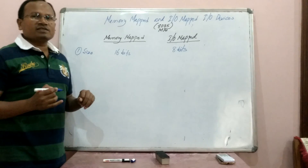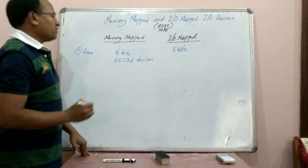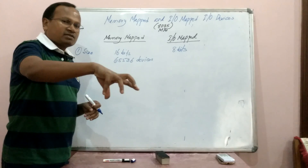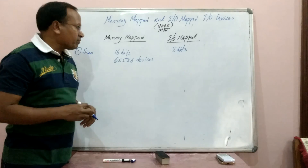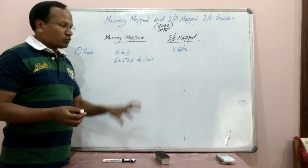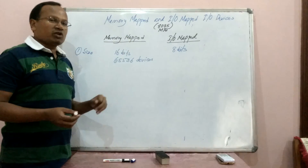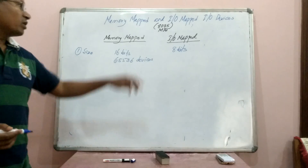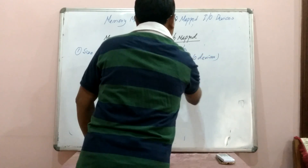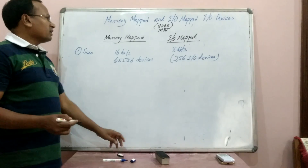How many maximum memory-mapped IO devices can we have? 65,536 devices — that is 2 to the power 16 IO devices. Each memory address is connected to one IO device, so the maximum number of memory-mapped IO devices is 65,536. For IO-mapped IO, we can have a maximum of 256 devices, which is 2 to the power 8. This is the first difference between memory-mapped and IO-mapped IO devices.